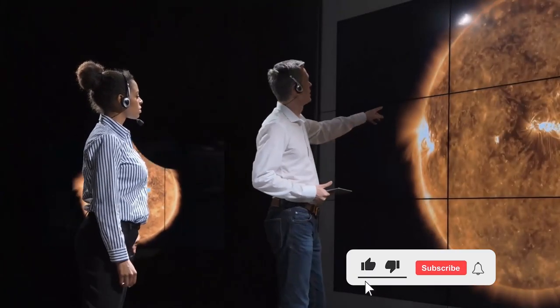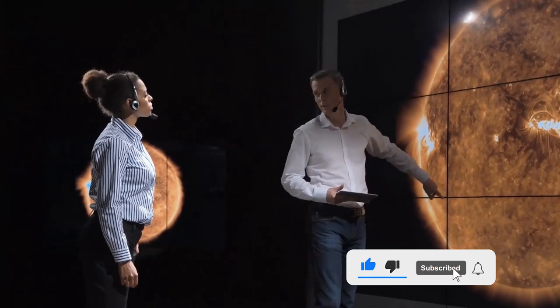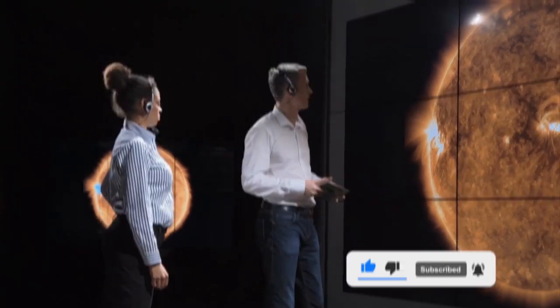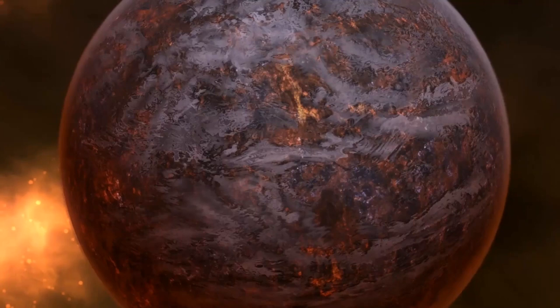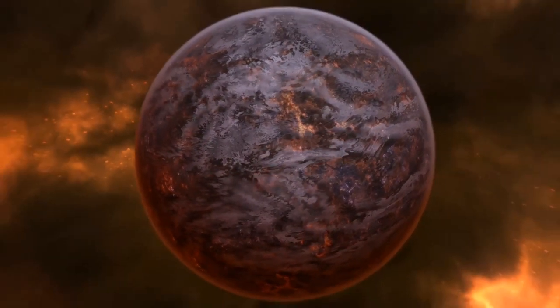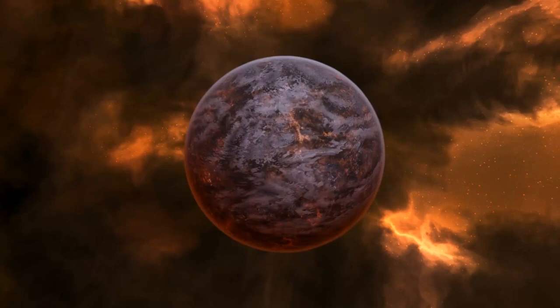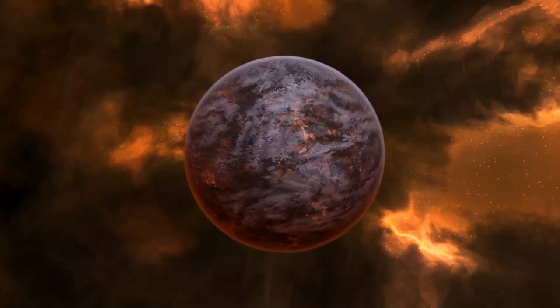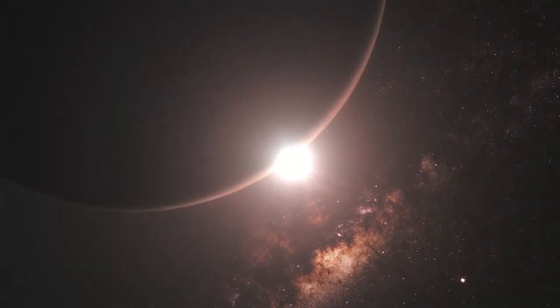After much speculation, NASA has announced that they may have received the first ever alien signal originating from Proxima b. Located just 4.2 light years away, the Proxima Centauri system has always intrigued astronomers about its potential habitability. Let's take a closer look.